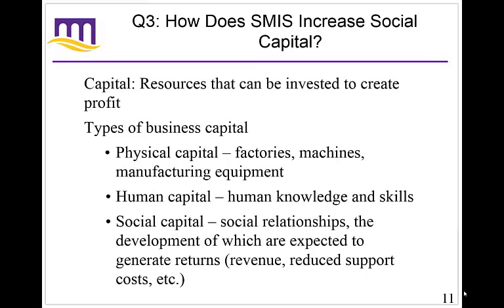Do you see how that small shift in definition makes a big difference? Profit fits in as we make decisions about which consumer goods are the best things to invest in based on expected future returns — capital flows to where there's the greatest potential to increase value in our lives. The reason I have such a huge problem with this definition is that when the author gets to defining social capital, it's based on this flawed original definition, and his discussion of social capital is completely Machiavellian in its view of human relationships.